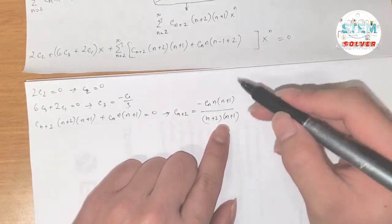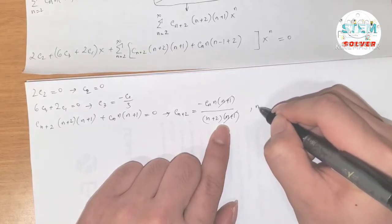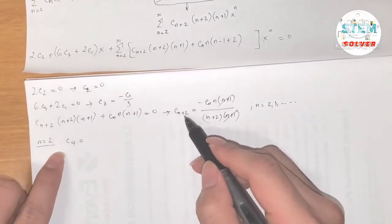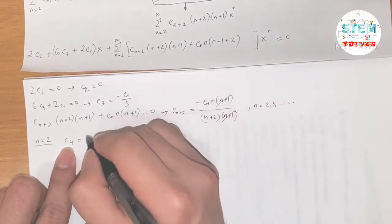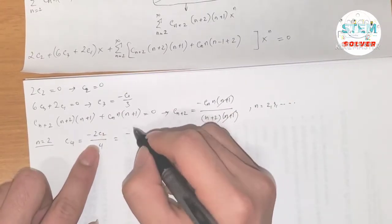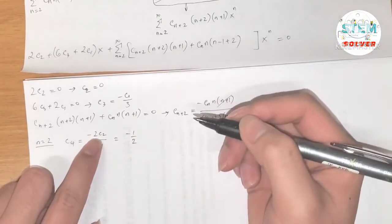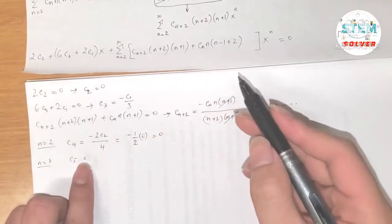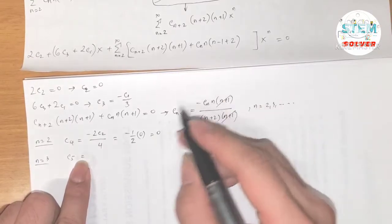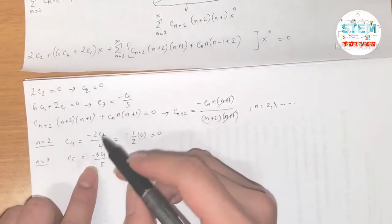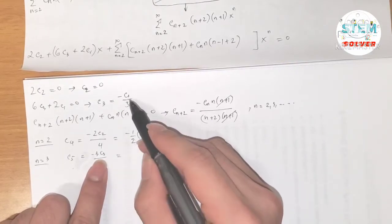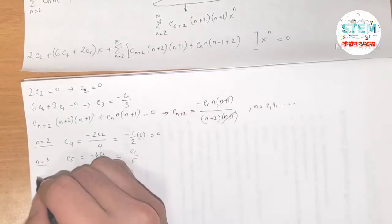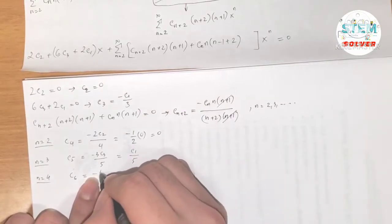Computing coefficients: when n=2, c₄ = −2c₂/4 = −½·c₂ = 0 since c₂ = 0. When n=3, c₅ = −3c₃/5. Since c₃ = −1/3, we get −3·(−1/3)/5 = 1/5, so c₅ = c₁/5. When n=4, c₆ = −4c₄/6 = 0 since c₄ = 0.